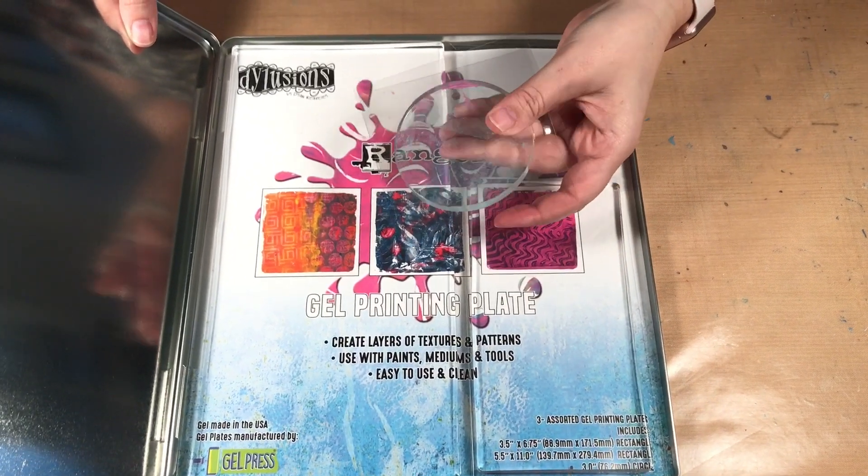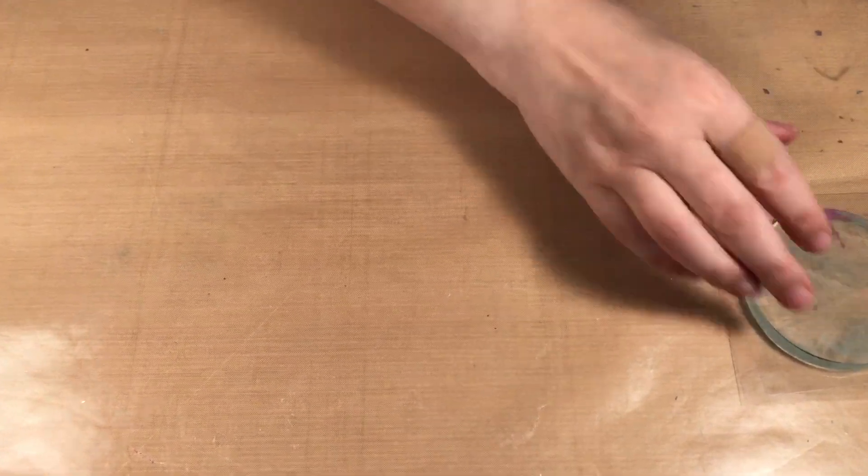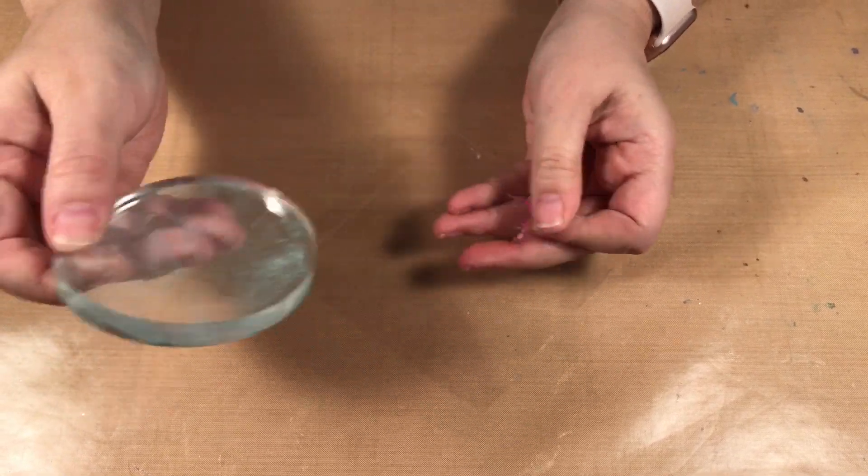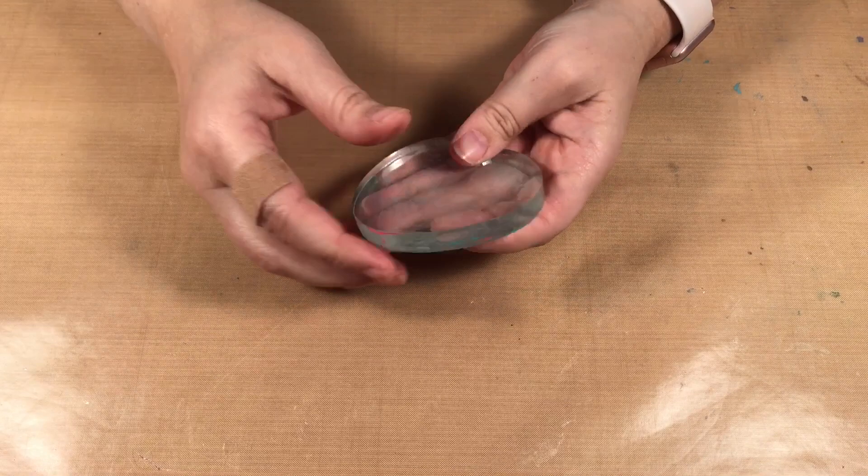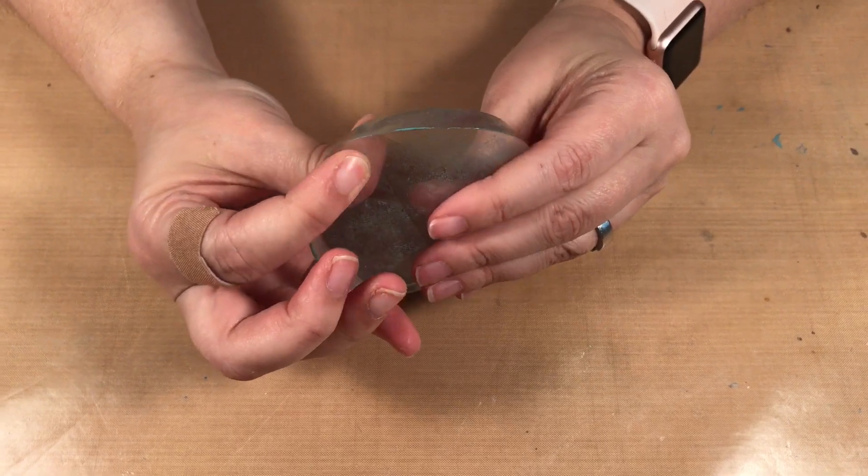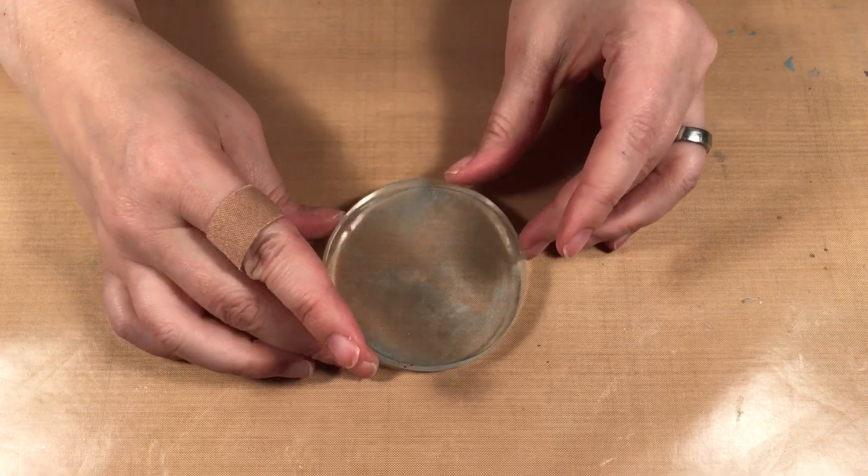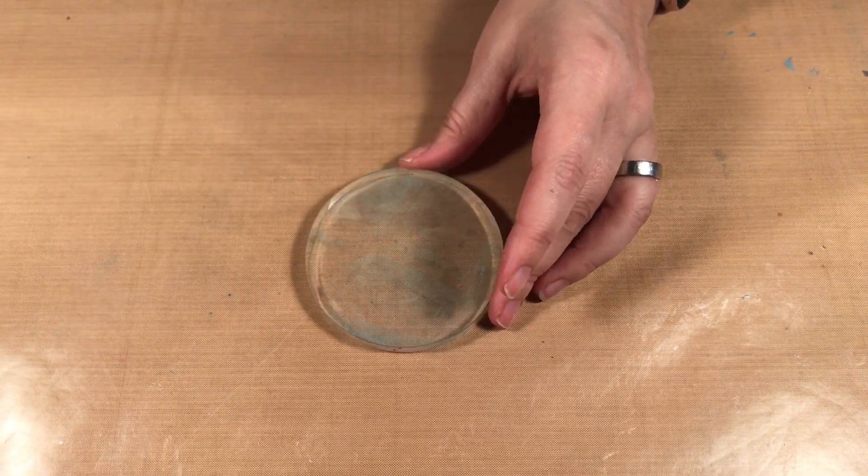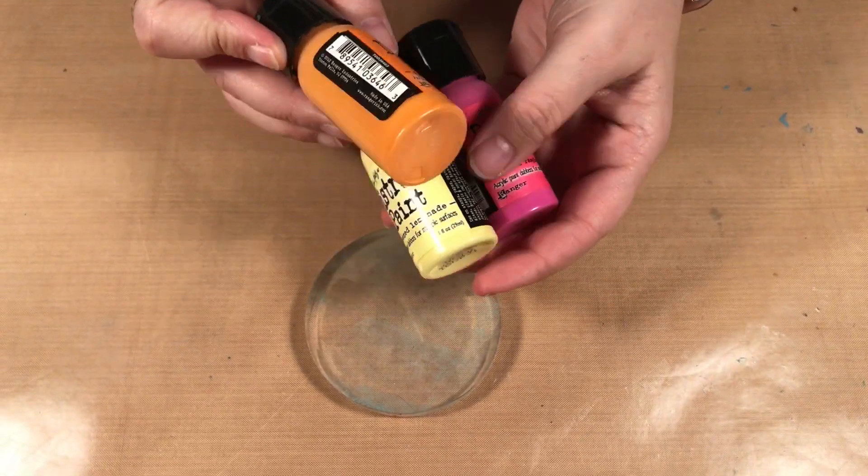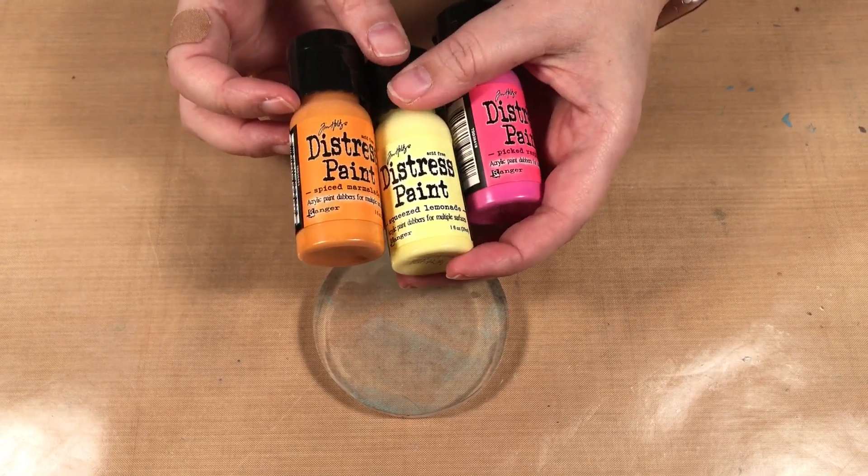For this card I am using the little three inch circle gel press. I'm going to remove it from both sides of the plastic and you can see it's nice and flimsy, about three quarter inch thick piece of little gel. Then I'm going to be using some distress paints. In my sample I used blue but this time I'm going to use yellow, orange, and pink.